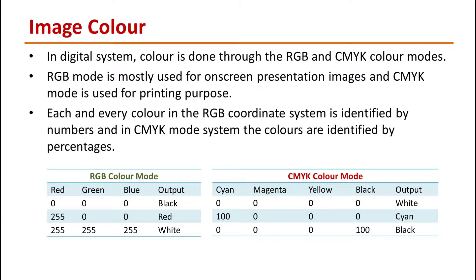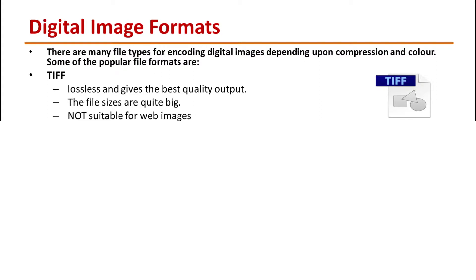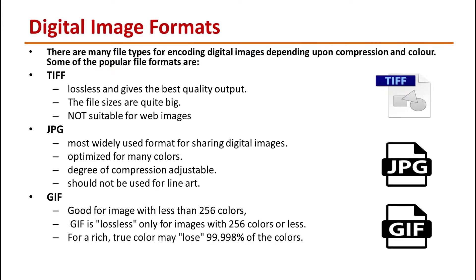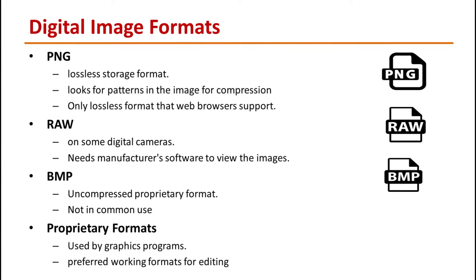RGB mode is mostly used for on-screen presentation images and CMYK mode is used for printing purposes. There are many image file formats: TIFF is lossless and gives the best quality output but file sizes are quite big. JPG is optimized for photographs and similar continuous tone images with many colors; JPG should not be used for line art. GIF is lossless only for images with 256 colors or less. PNG is a lossless storage format that looks for patterns in the image to compress file size.